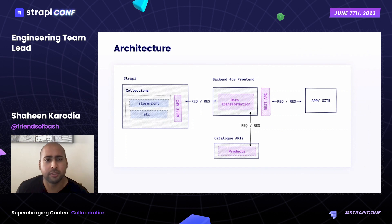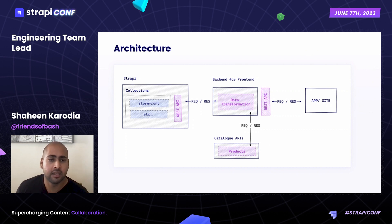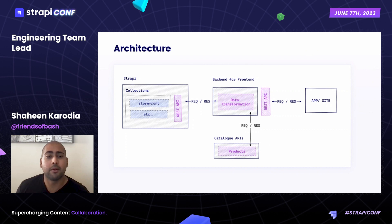Before getting into a demonstration, I want to discuss our high-level architecture. The storefront collection managed in Strapi is queried via Strapi's generated REST APIs. This feeds into a small Express app — our back-end for front-end. This BFF does most of the heavy lifting: it interfaces with our catalog APIs to fetch product data and transforms the Strapi data into a more compact and easier format for our front-ends to work with. Our app and websites query this BFF and render storefronts based on this data.